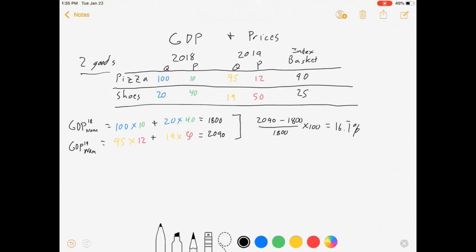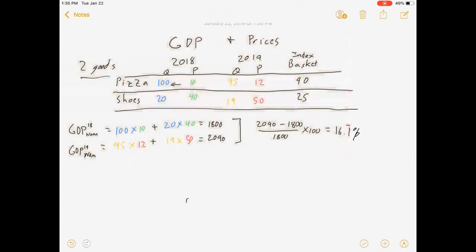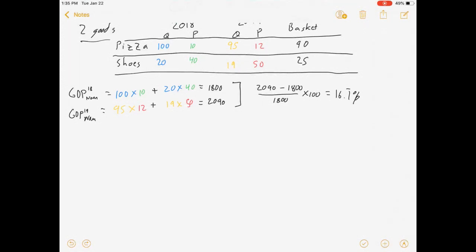Because if we look at pizza, we made less of it in 2019 than in 2018, and if we look at shoes we made less of them in 2019 than in 2018. So production is unambiguously lower, but nominal GDP tells us that production has risen. So we want to break this apart. We've got falling production, rising prices.